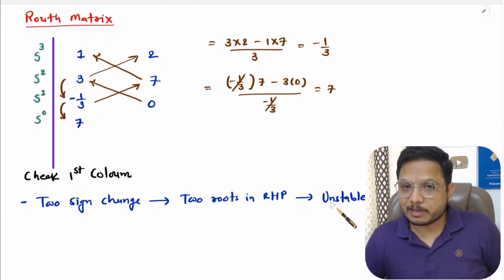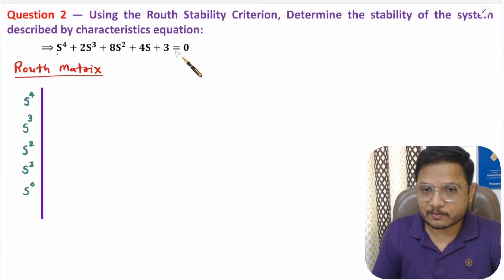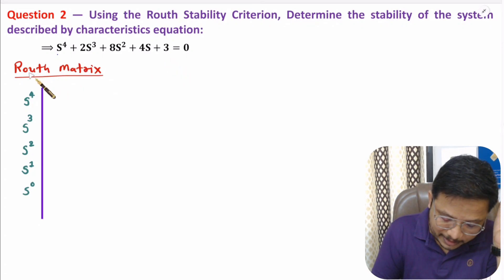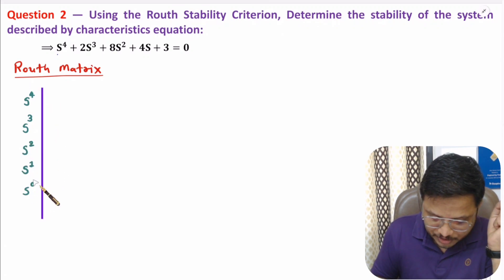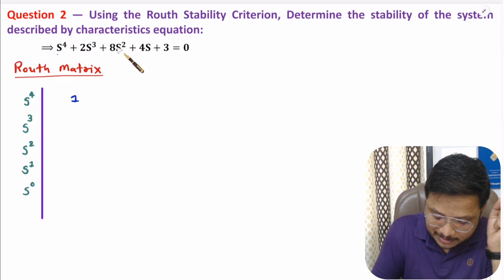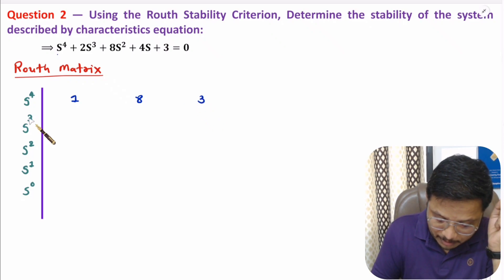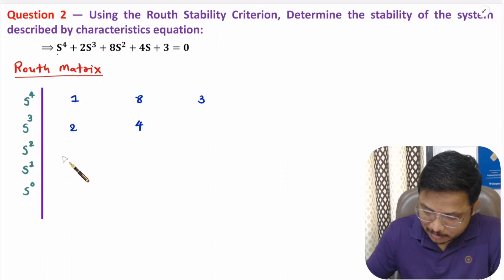Let us solve the second problem. The characteristic equation is already given, so the first step is done. In the second step we identify the Routh matrix. The highest order is s⁴, so we note down s⁴, s³, s², s¹, s⁰. With s⁴: coefficient 1, skip, coefficient 8, skip, coefficient 3. With s³: coefficient 2, skip, coefficient 4, skip, then 0.